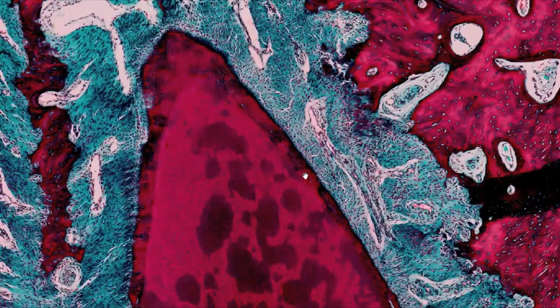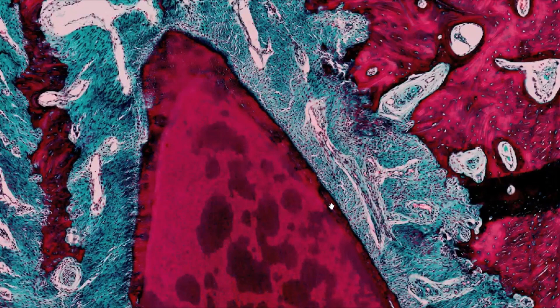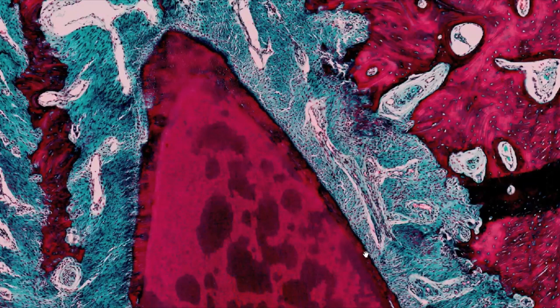Connective tissue referred to as the periodontium, found in the root, is the outermost part of the tooth visible in the specimen.